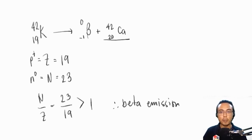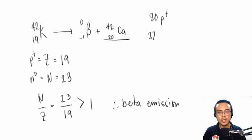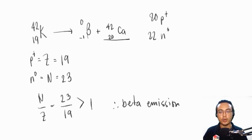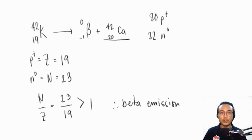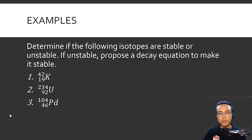Is calcium-42 stable? Calcium has 20 protons and 22 neutrons — both even numbers. Applying the even-protons/even-neutrons guideline for intermediate elements, calcium-42 is probably stable. This demonstrates how multiple guidelines can be mixed together to determine the stability of isotopes.